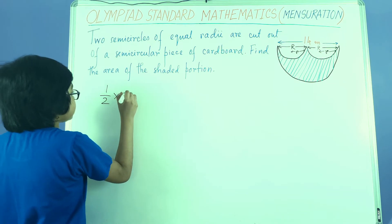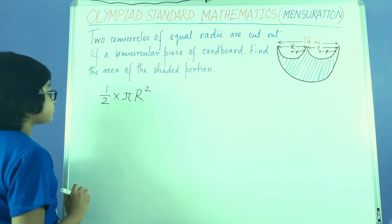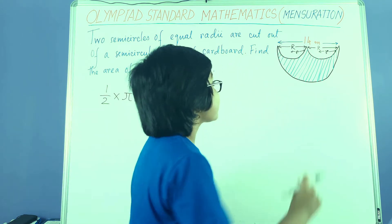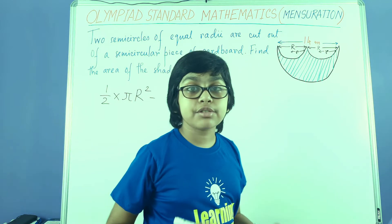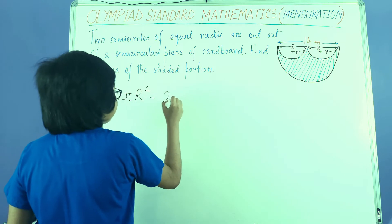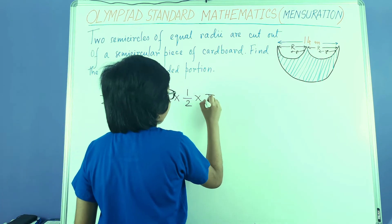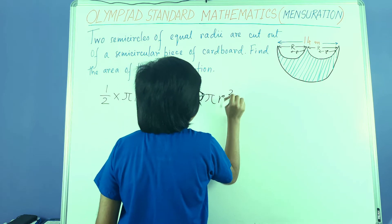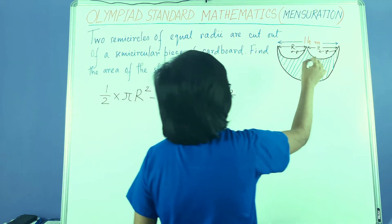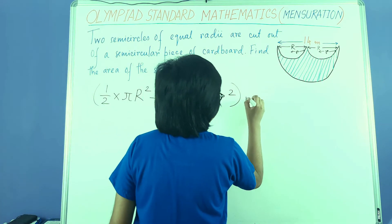Half into pi capital R squared. Now we need to subtract the area created by these two small semicircles. That is 2 times the area of one semicircle: 2 into half into pi small r squared, because small r is the radius of the small semicircle. And finally, our unit is meter squared.